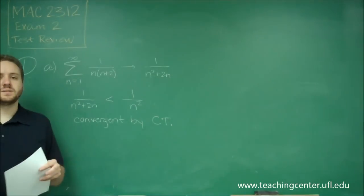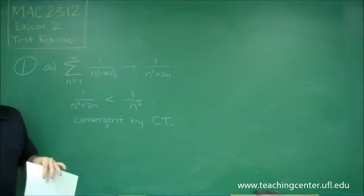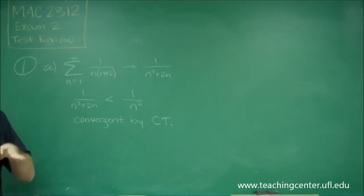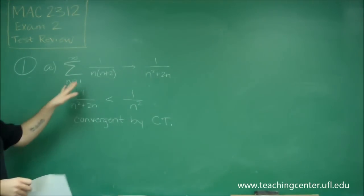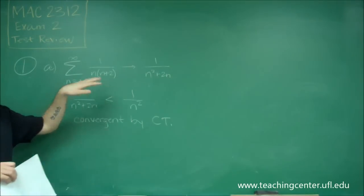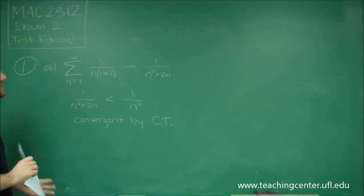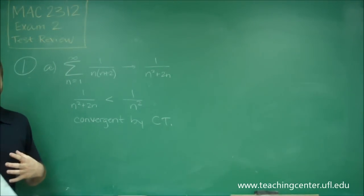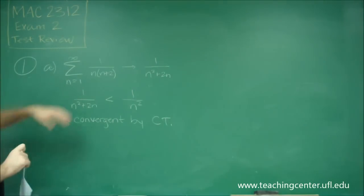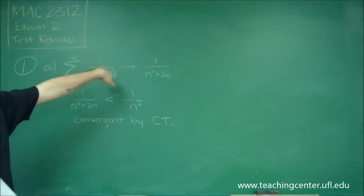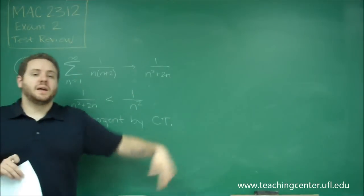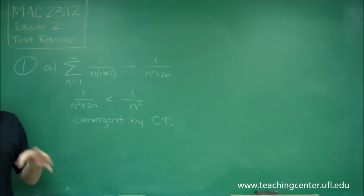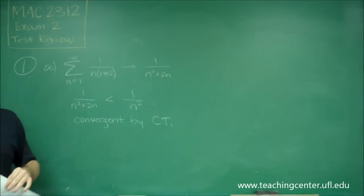For this one though, we also need to find the sum. Now, finding the actual sum of a series is usually something you can't do. But for a series of this form, we can. That's because this works by partial fraction decomposition, and we can turn this into a telescoping series. So whenever you see that your denominator is factorable and it has to do with polynomials, you should immediately think you might be asked for the sum, and it's going to be a telescoping series if you do.